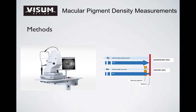Using a single wavelength of fundus reflectometry, macular pigment can be easily detected with novel equipment. Light is emitted and reflected in the macular area and paramacular area. The result is the measurement of macular pigment parameters and the distribution profile.